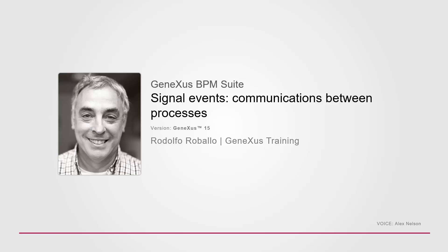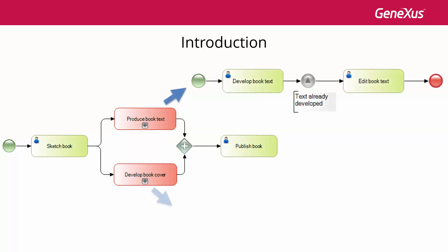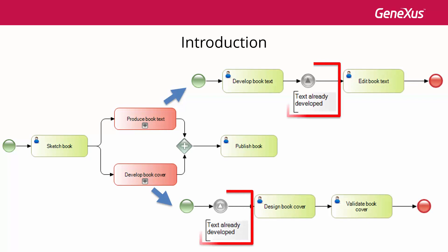In this video we will see some ways to use the signal type event. Signal events are used to send or receive signals within or outside the process. For this reason they're useful for both communication between parts of the same process and between processes linked by a hierarchical relationship. This implies that it's possible to signal the occurrence of an event that can be detected in any part of a process, sub-process, or even paired process.